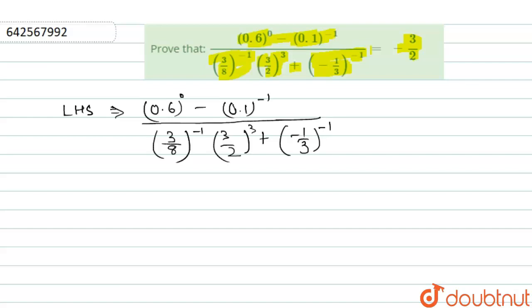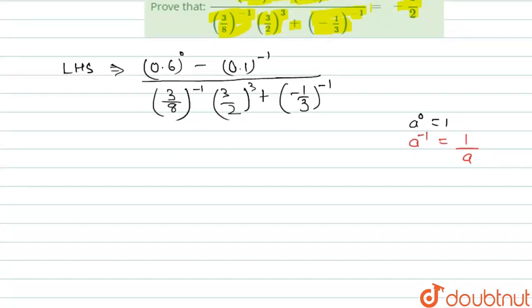Now, we know that a real number to the power 0 will give us the value 1, and 0.1 can be written as 1 by 10. And a to the power minus 1 is basically 1 by a. So, using these properties in the expression written,